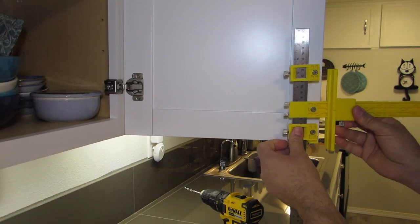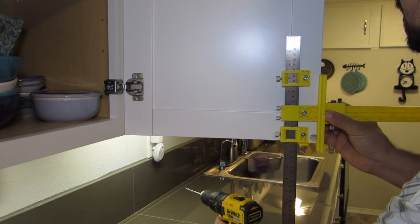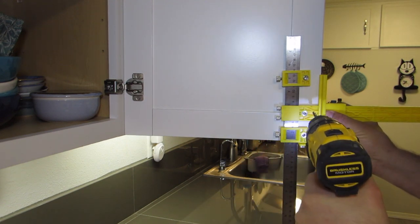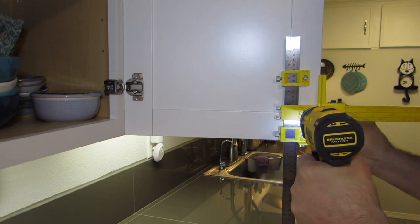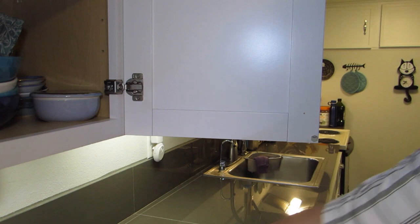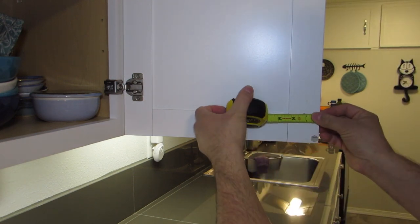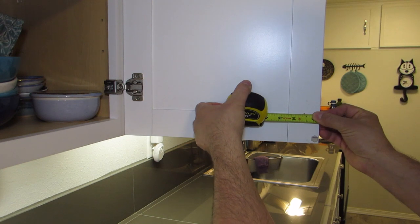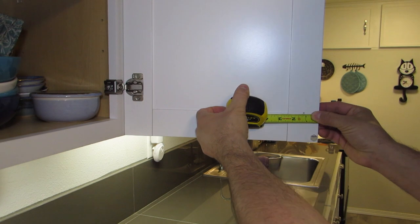Now that we have the jig adjusted, what I would like to do is just drill a small hole, not all the way through on the backside. Just enough to make a mark so that we can measure, make sure it's lined up. The first time we do it, we want to make sure that it's in alignment.